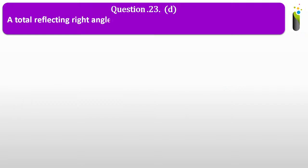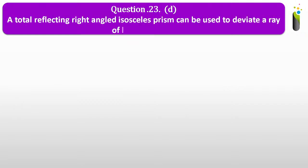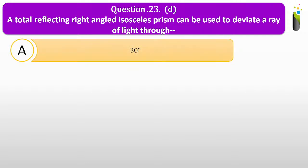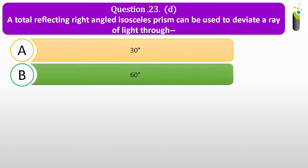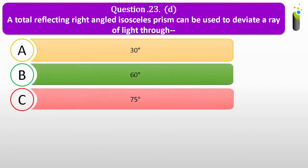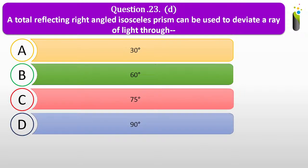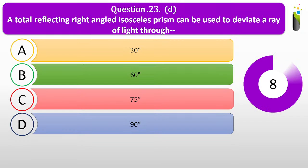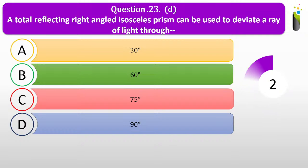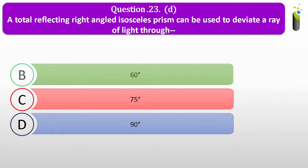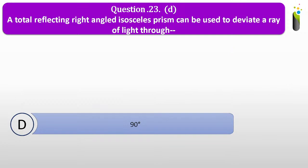Question number twenty-three D. A total reflecting right-angled isosceles prism can be used to deviate a ray of light through dash. Options: A, 30 degrees; B, 60 degrees; C, 75 degrees; D, 90 degrees. The answer is D, 90 degrees. A total reflecting right-angled isosceles prism can be used to deviate a ray of light through 90 degrees.